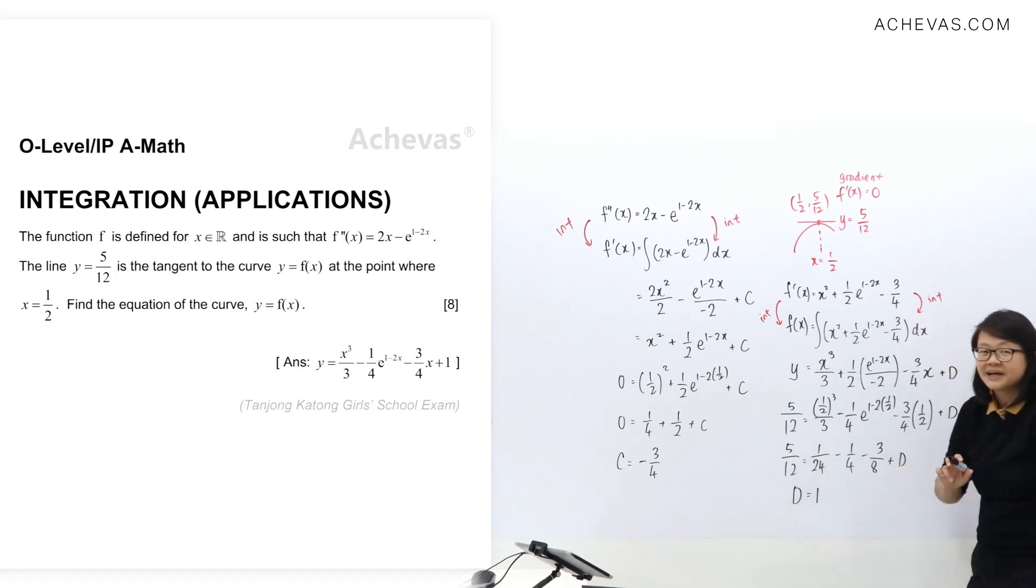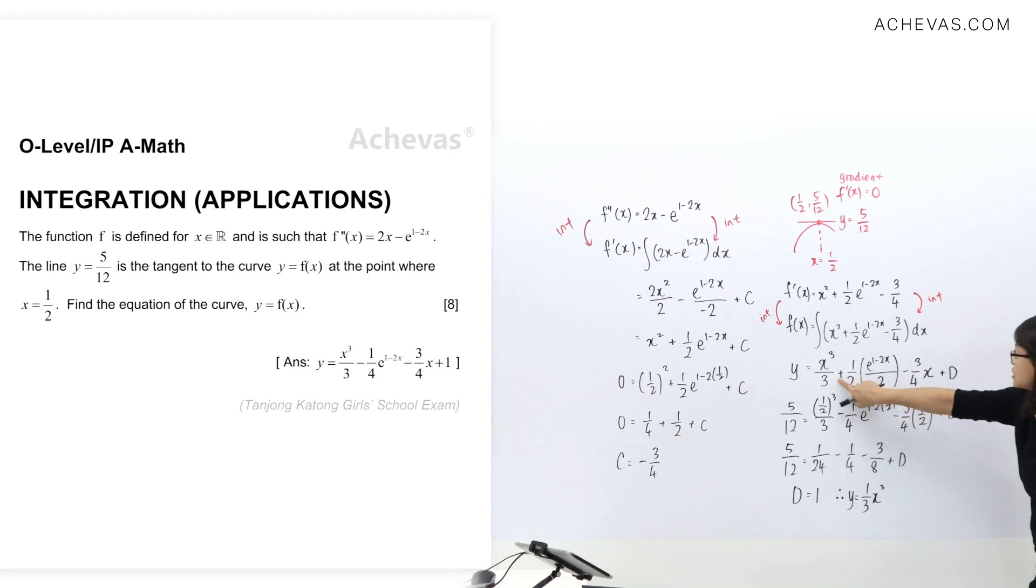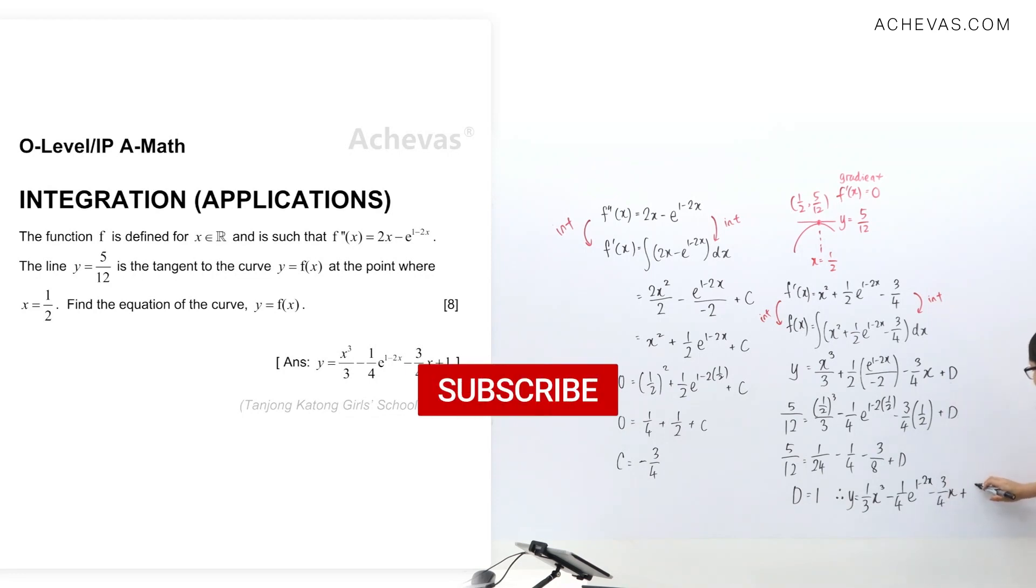Do remember the last step. Let me conclude again. Equation of curve: y = we're going to write back this one here. You can write x³/3 or 1/3 x³, that's up to you. And this part here, I've combined this plus and this minus to be minus, and I'm going to write 2 times 2, so I'm going to write 1/4 e^(1-2x) - 3/4 x, and replacing d as plus one.